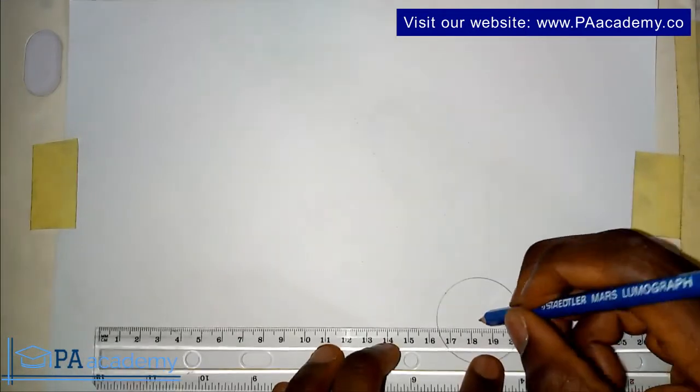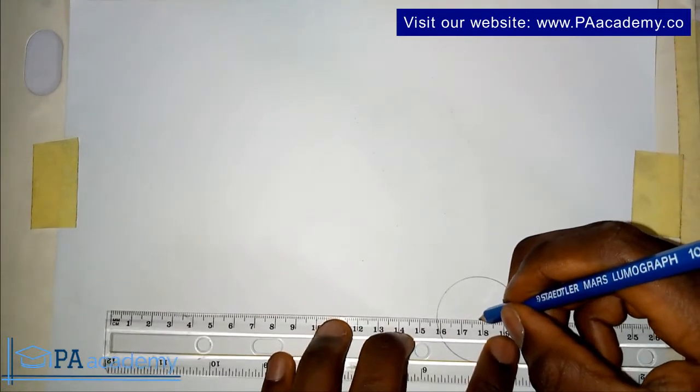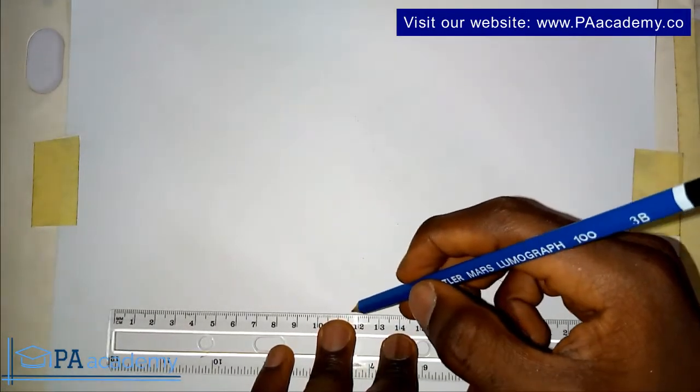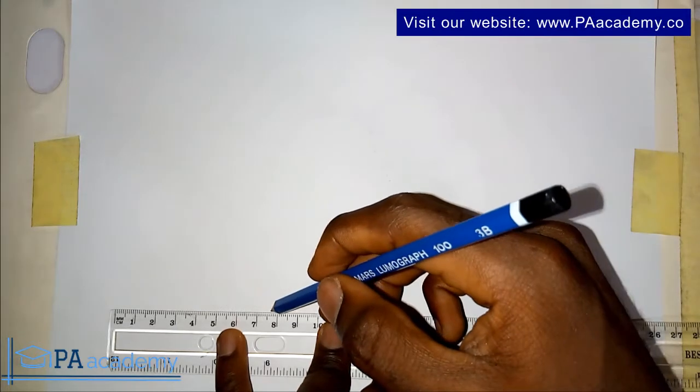The next thing is to divide this circle into 12 equal parts. There's a video in the playlist on technical drawing that explains how to divide a circle into 12 equal parts. You can either use your protractor or you use your compass, whichever method is convenient for you.